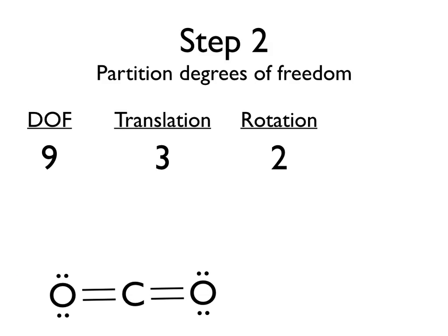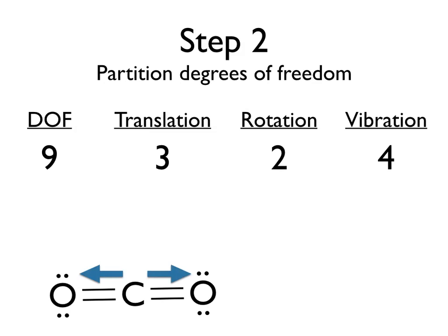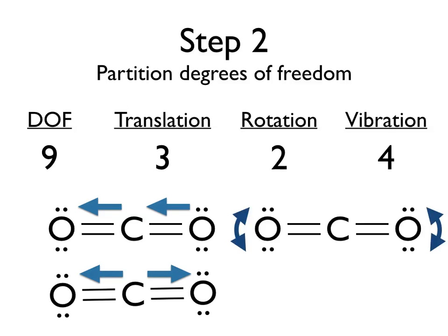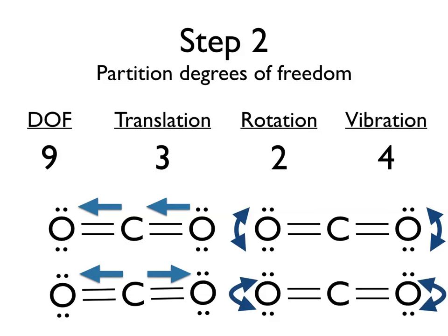Our third type of motion that can store energy is called a vibration. We can calculate the number of vibrational degrees of freedom by noting that there are 9 total degrees of freedom, and so far we have 5 accounted for, meaning we must have 4 leftover vibrational degrees of freedom. Those are: a symmetric stretch of the two oxygen atoms relative to the carbon atom, an asymmetric stretch where both oxygens move in the same direction relative to carbon, and two bending vibrational modes where the oxygen atoms move up and down relative to carbon — one in the plane of the screen and one out of the plane.